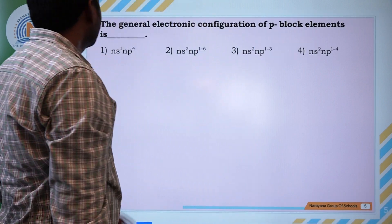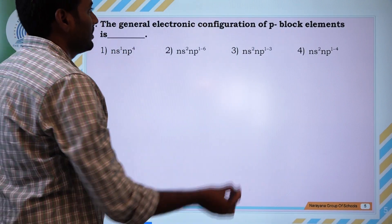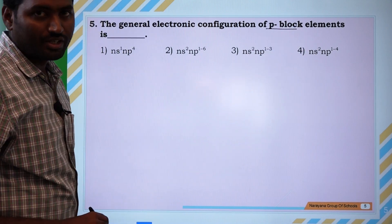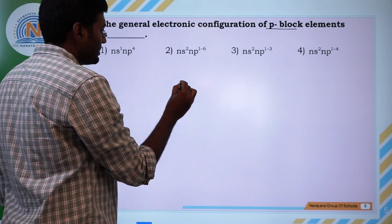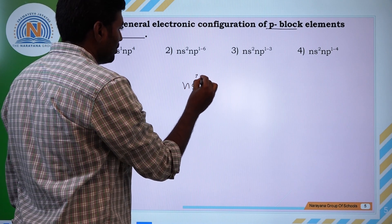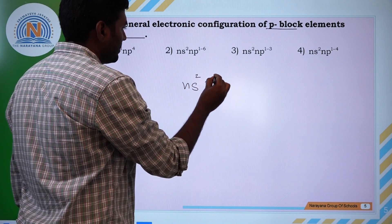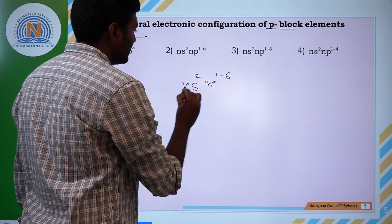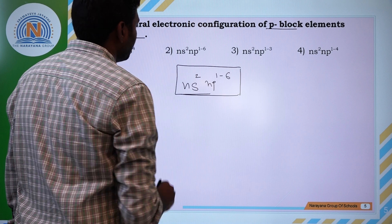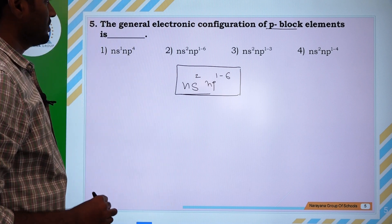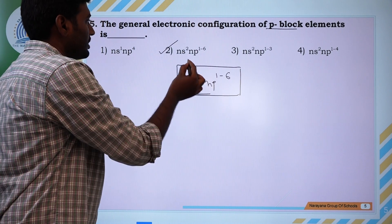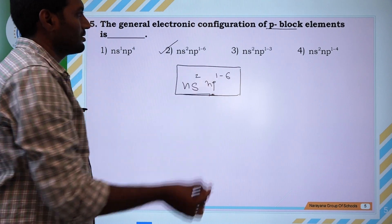Next question: the general electronic configuration for P-block elements is ns2 np1-6. That is the general electronic configuration for P-block elements.